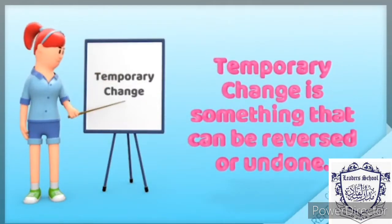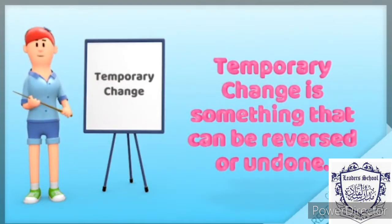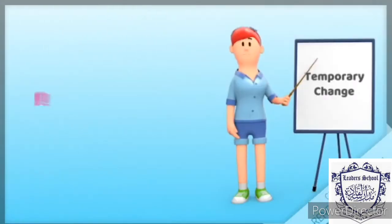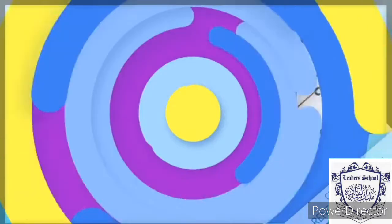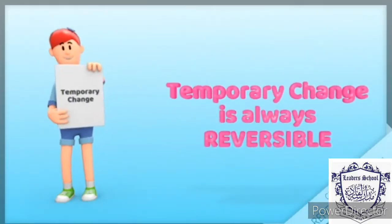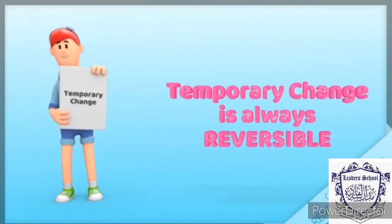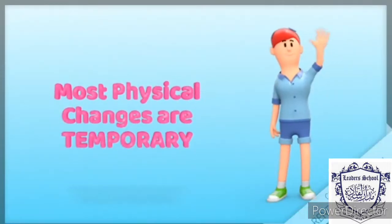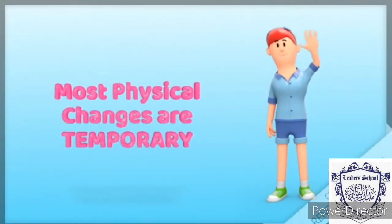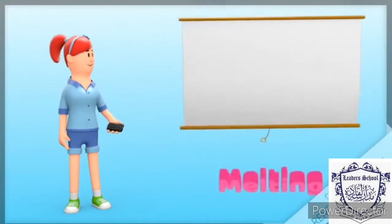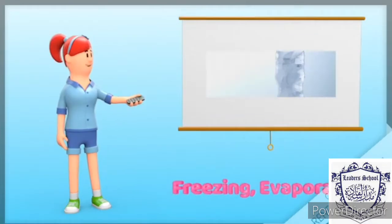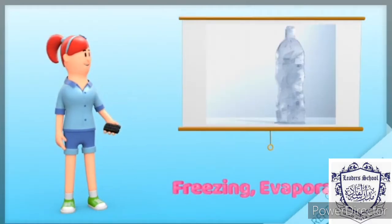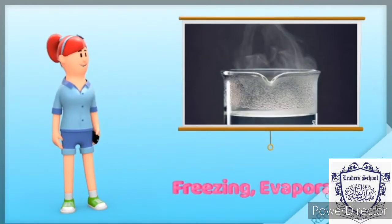A temporary change is something that can be reversed or undone. A temporary change can change or alter how a material feels or looks, but without producing a new material or new matter. A temporary change is always reversible. Most physical changes are temporary — like melting, freezing, evaporating, condensing, and sometimes dissolving.